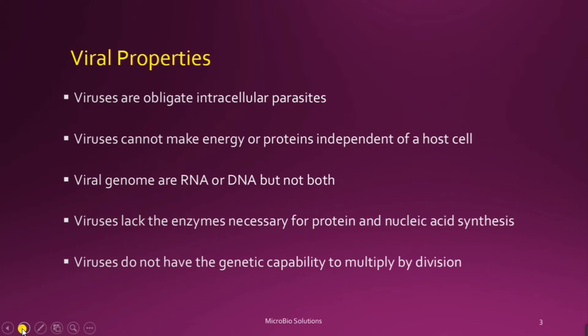The genetic material of the virus contains RNA or DNA but not both. Unlike bacteria, which have both RNA and DNA together, viruses have either RNA or DNA — there can be RNA viruses or DNA viruses. These viruses also lack enzymes necessary for protein and nucleic acid synthesis, so they take help from the host cell. Furthermore, viruses do not have the genetic capability to multiply by division, which is the multiplication process of bacteria. Viruses multiply by a complicated process called viral replication.